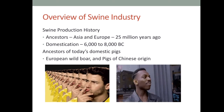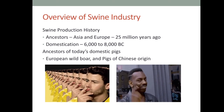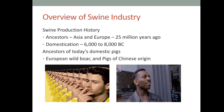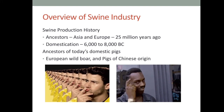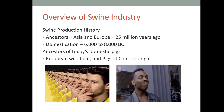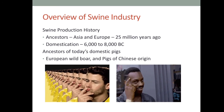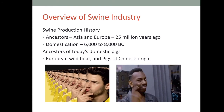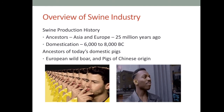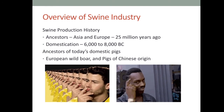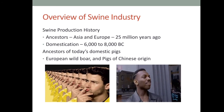Swine production history dates back 25 million years ago, starting in Asia and Europe. The domestication of this animal started between 6000 to 8000 BC, when ancestors were first raised for their consumption and production. The ancestors of today's domestic pigs are the European wild boar and pigs of Chinese origin.